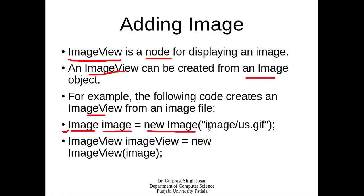This is the constructor call where we pass the name of the file as an argument. In the next line, we create an ImageView object by passing the image variable — created in the previous step — as an argument to the ImageView constructor. The ImageView can then be added to the pane, the pane to the scene, and the scene to the stage, and finally we show the stage. The rest of the steps are the same as adding any other control.